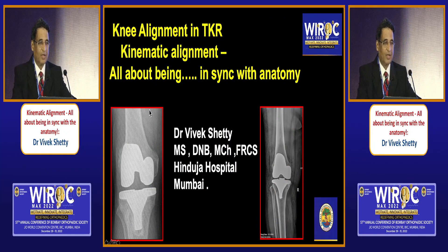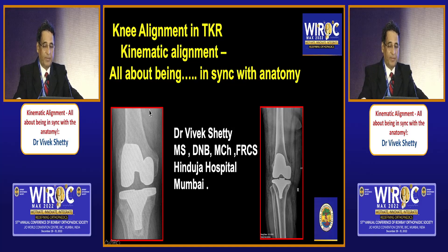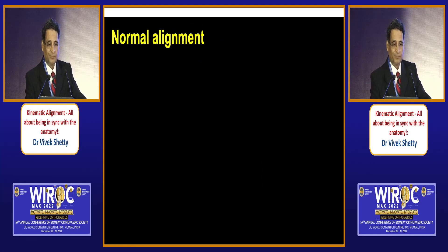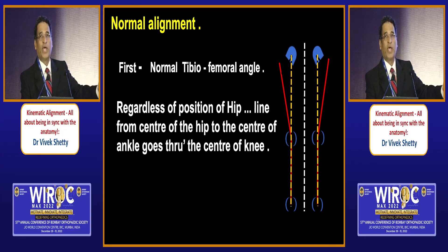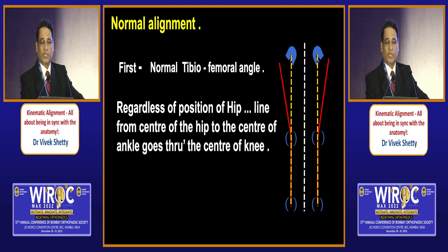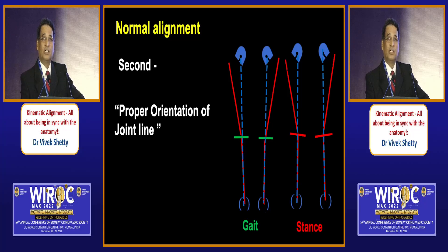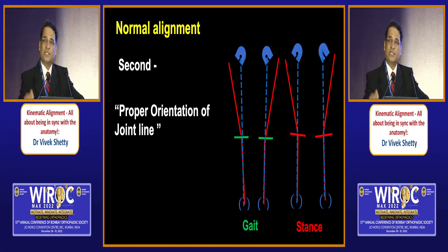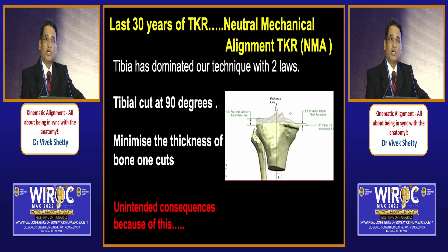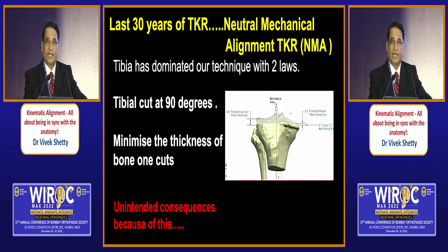Good afternoon. Moving on to why I like the concept of kinematic alignment: in normal alignment, irrespective of leg position, the mechanical axis passes through or near the center of the knee. However, the joint convergence angle changes between stance phase and gait phase — in stance phase the joint line slopes medially, while during walking it becomes parallel. Conventionally, tibia-first technique has dominated: you cut at 90 degrees and try to minimize the tibial cut as much as possible.